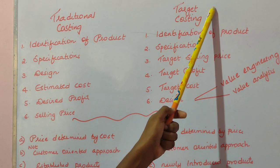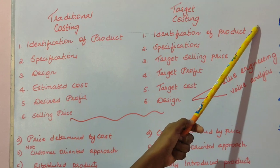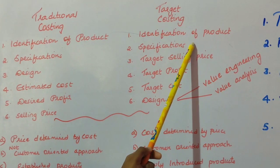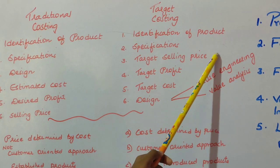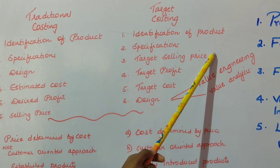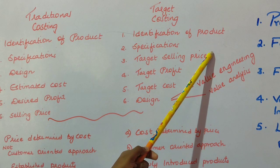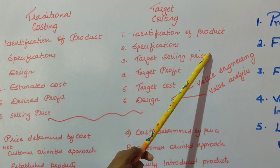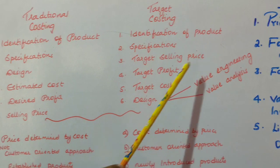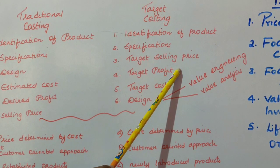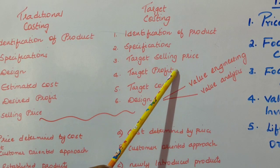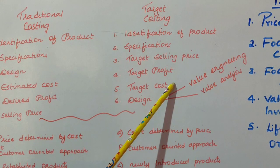In target costing: the product is identified, specifications are decided, and then the target selling price is fixed. This price is fixed on the basis of the customer's perception — that is, at what price the customers are ready to pay. After that, the target profit which the company wants is determined. From the target selling price, target profit is deducted, and the result is known as the target cost.